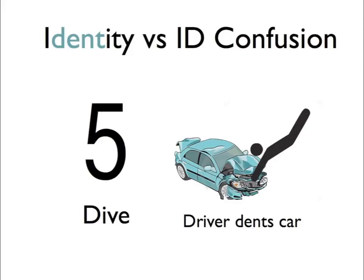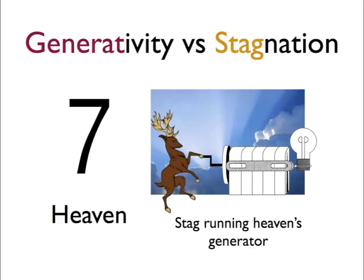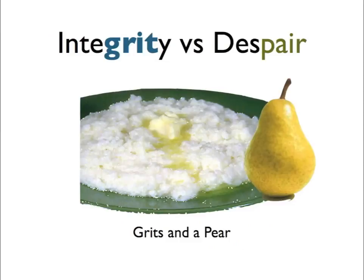Number five — we have a diver, the diver's dented a car, so identity versus identity confusion. Six is sticks — what are those sticks doing? They're smooching, so we have some intimate sticks and another stick out to the side. Seven is heaven — the lights are out and the stag is running the generator, generativity versus stagnation. Finally, number eight: eight's a plate, what's on the plate? Grits — integrity and despair — there's a pair on that plate. That's the peg method for Erickson's eight stages of development.